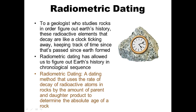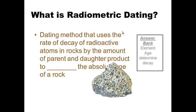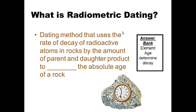Radiometric dating is a dating method that uses the rate of decay of radioactive — that is, unstable — atoms in rocks, measured by the amount of parent and daughter product, to determine the absolute age of a rock. For your notes, write 'What is radiometric dating?' — question on the left-hand side, answer on the right-hand side. Use the answer bank to determine which word best completes the sentence. Pause this; I'm going to move on.